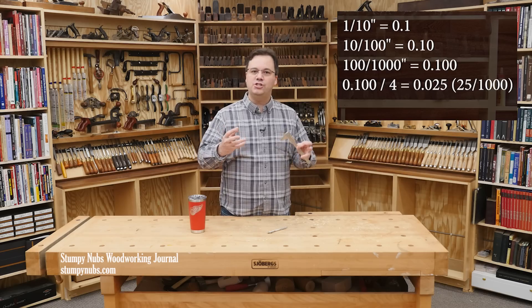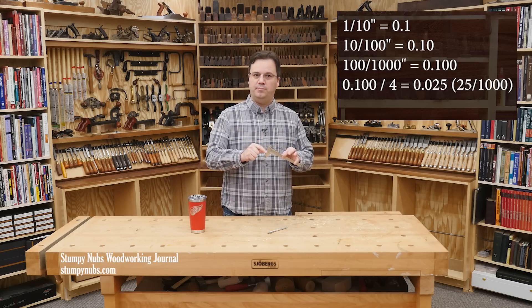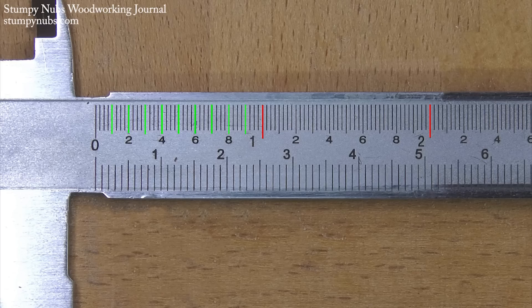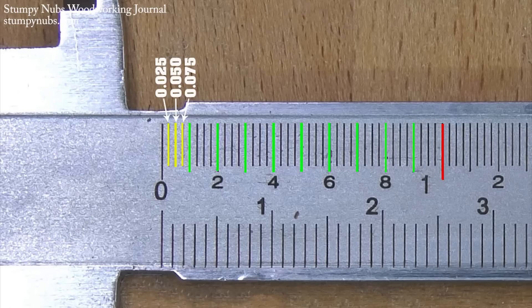Now let's apply what I just taught you to the scale on the caliper. The inches are divided again into ten smaller increments. The decimal equivalents are point one, point two, point three, and so on, up to one-point-zero. Those are each divided into four smaller increments, point zero-two-five, point zero-five-zero, and point zero-seven-five, and so on.